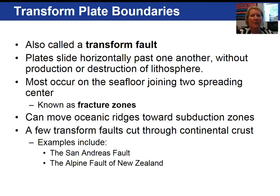Transform fault boundaries are a situation where the lithospheric plates are sliding past one another, so we are not producing or destroying lithosphere. Most of these faults are found along the seafloor and they offset the mid-ocean ridges. Those divergent plate boundaries that wind through the ocean basins are actually offset by transform faults. We call these fracture zones.